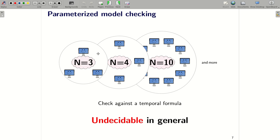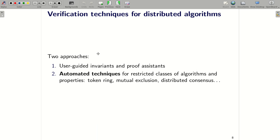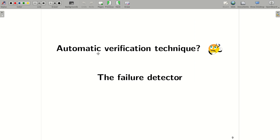So now we know that verification of the failure detector is a parameterized model checking problem. Unfortunately, parameterized model checking is undecidable in general. Can we overcome this negative result? The answer is yes, and there are two approaches. The first one is based on user-guided invariance and proof assistance. It is a general approach, but it requires a lot of human efforts. The second approach is based on automatic reasoning techniques. These techniques have been applied to verify restricted classes of algorithms and properties. For instance, token ring, mutual exclusion, or distributed consensus.